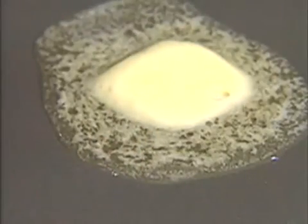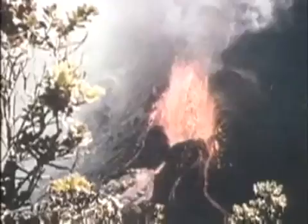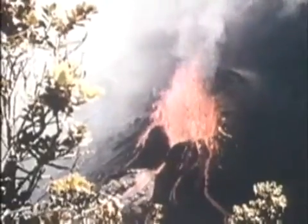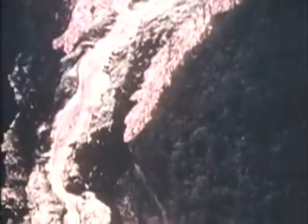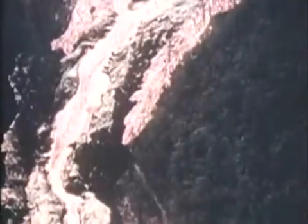Matter can change from one phase to another in still other ways. As we saw earlier, a solid can change into a liquid when it's heated. The temperature at which this change happens is called the solid's melting point. The melting points of different kinds of rock are very high — on average about 1,200 degrees Celsius. The melting point of ice is much lower. At sea level, ice melts at just above 0 degrees Celsius, or 32 degrees Fahrenheit.